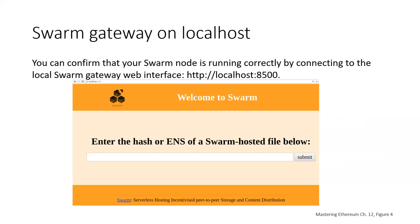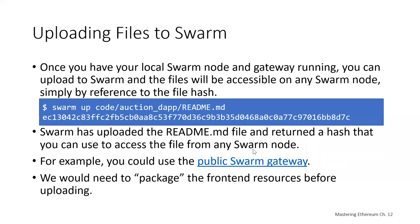The gateway lets you enter the hash or ENS of a Swarm-hosted file to connect to. Once you have your local Swarm node and gateway running, you're ready to upload files to it. You can upload files to Swarm and then any Swarm node will be able to access those files simply by providing a reference to the file hash.